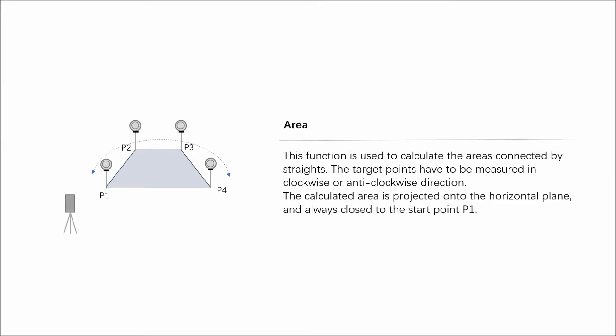This function is used to calculate the areas connected by straights. The target points have to be measured in clockwise or anti-clockwise direction. The calculated area is projected onto the horizontal plane, and always closed to the start point P1.